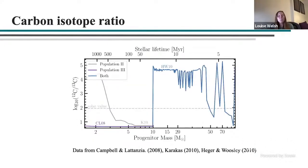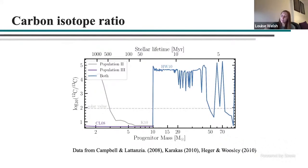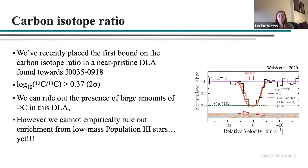Finally, I want to highlight some more recent work using the carbon isotope ratio, which fits nicely with the next talk. I'm showing the carbon-12 to carbon-13 ratio as a function of progenitor mass for a range of stellar populations. The only way to produce low carbon-12 to carbon-13 ratios is through low-mass Population III stars or intermediate-mass Population II stars. If we can detect this ratio in a near-pristine system, we may detect the presence or absence of low-mass Population III stars. Using ESPRESSO, we placed the first bound on this ratio in a near-pristine DLA — we could rule out large amounts of carbon-13, but couldn't empirically rule out enrichment from low-mass Population III stars.